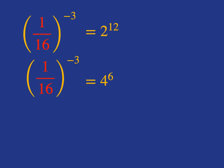Now we've just seen that 1/16 to the negative 3 can be written as 2 to the 12, and it can be written as 4 to the 6. So obviously 2 to the 12 and 4 to the 6 must be equal to each other. Just want to show you how we can see that 2 to the 12 and 4 to the 6 must be equal to each other in another way.